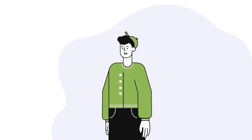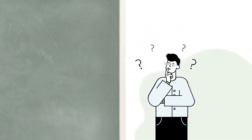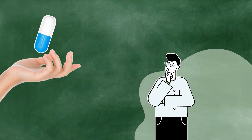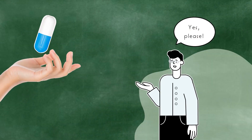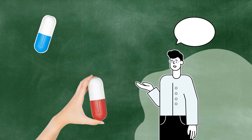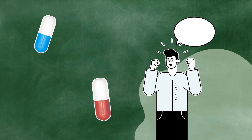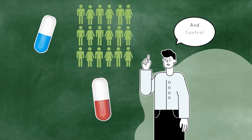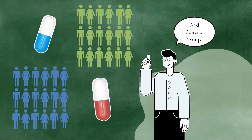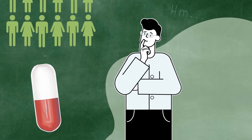If you wanted to design a good clinical trial, what would you need? A research object? A reference intervention? Placebo is okay. An experimental group and control group. Have you got everything? Maybe estimands?